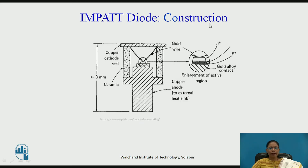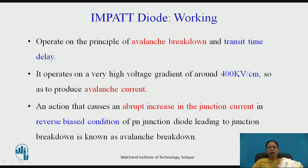This is the construction of the IMPATT diode. You can see the wafer here which has an N-P-N structure — a P+ heavily doped and N+ heavily doped region, and in between there is a drift space. A gold wire contact is taken out from here, leads are taken out, a heat sink is present, and all of this is placed in a ceramic housing. The IMPATT diode works on the principle of avalanche breakdown and transit time delay.